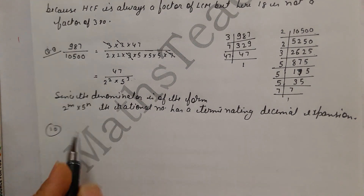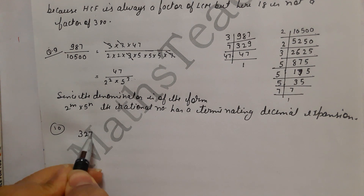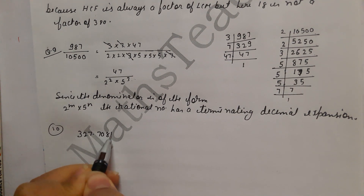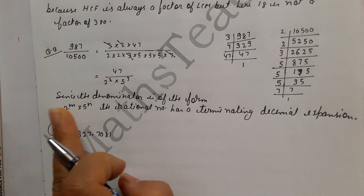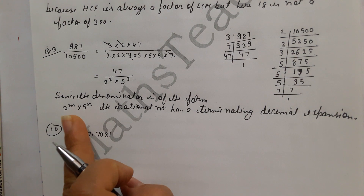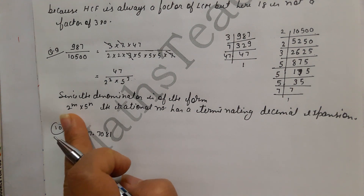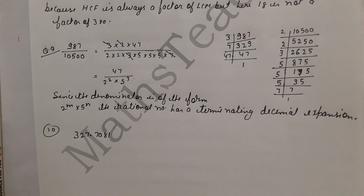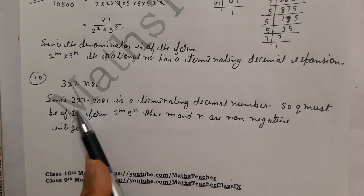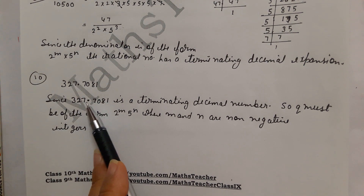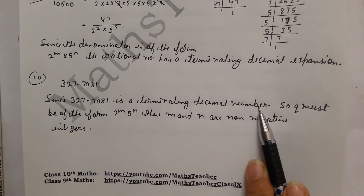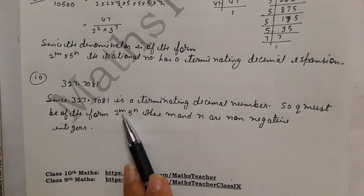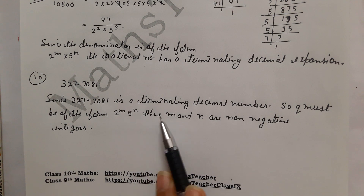So now the number you have to consider is 327.7081. This decimal expansion is terminating. So its denominator Q is in the form 2 power M, where the number of factors contains only 2 and 5. The answer is: since 327.7081 is a terminating decimal number, Q must be of the form 2 power M × 5 power N.